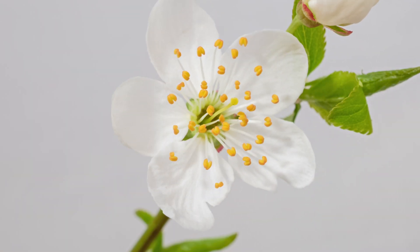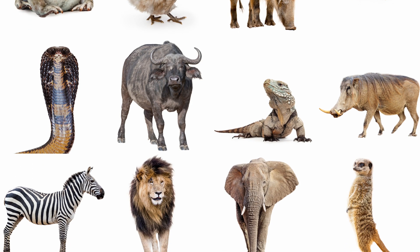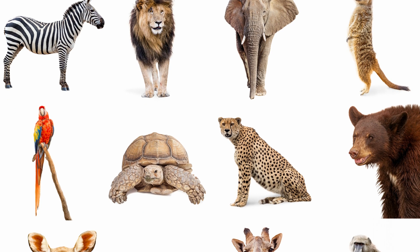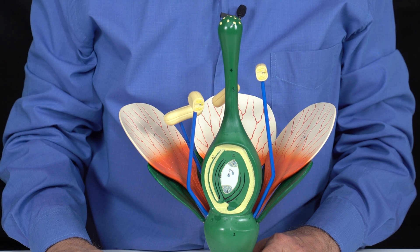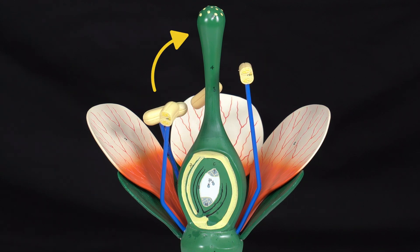There is an important difference in the reproduction of plants versus other living things. In other living things, sperm and eggs come from different bodies. But in plants — as seen in this flower model — both egg and sperm are produced in the same body. This creates a huge problem: pollen has to travel from the anther to the stigma. There is no other solution.